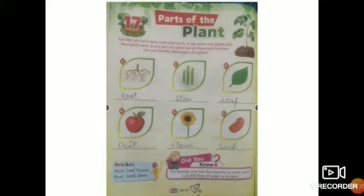Just like you have eyes, nose, and hands, in the same way plants also have body parts. Each part of a plant has an important function. Now we will identify one by one all the parts of a plant. Number 1 part is root. Now see number 2.